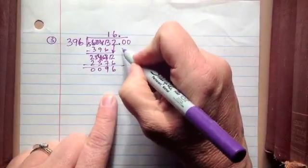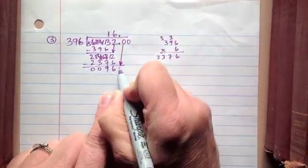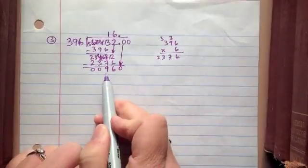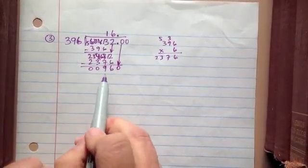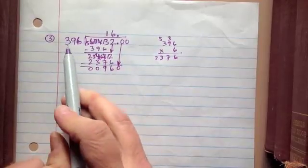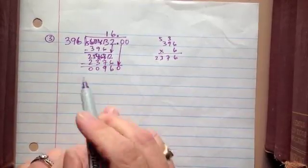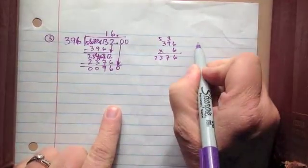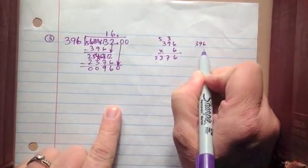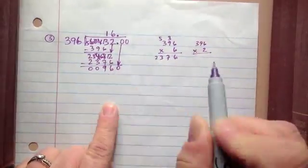So now I have a zero to bring down. I'm going to bring down the zero to here, and now treat this as 960. How many times can 396 go into 960? I'm going to estimate to be 2, because 2 of 2 400s would be 800, which is pretty close.